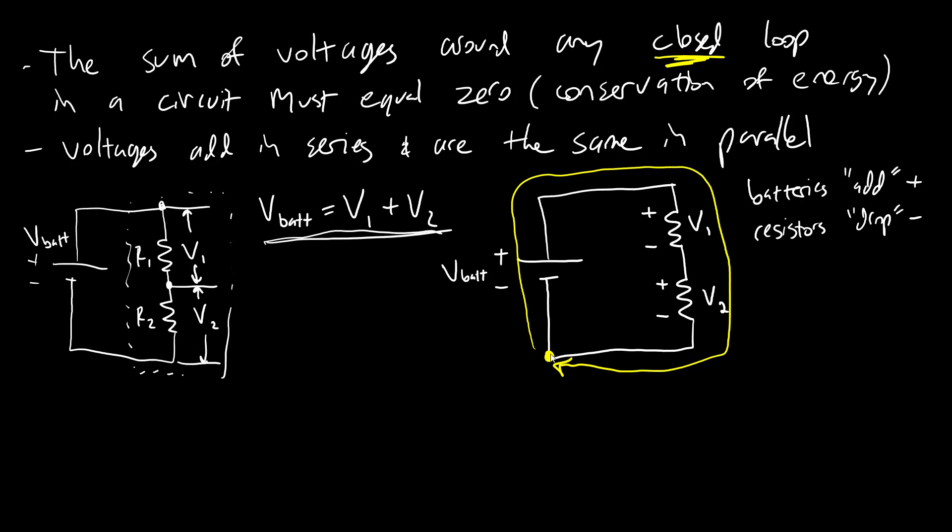So starting here, this is my zero point. I go through a battery. So that's going to add voltage. So I'm going to have plus my battery voltage. Then I'm going to go through a resistor, which drops voltage. So I'm going to subtract V1. I'm going to go through another resistor, which drops more voltage and subtracts V2. Then I am back to where I started. So I know that has to equal zero.